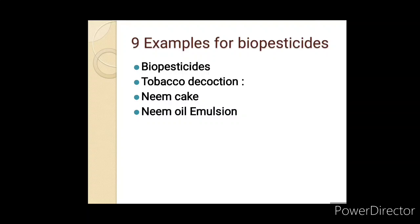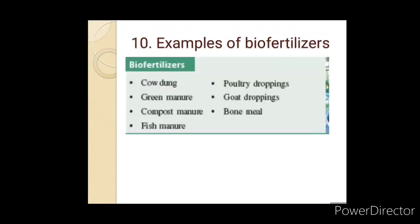Examples of bio-fertilizers include tobacco decoction, neem, and neem oil emulsion — these are bio-pesticides. Bio-fertilizers include green manure, compost manure, fish manure, and bio-fertilizers.